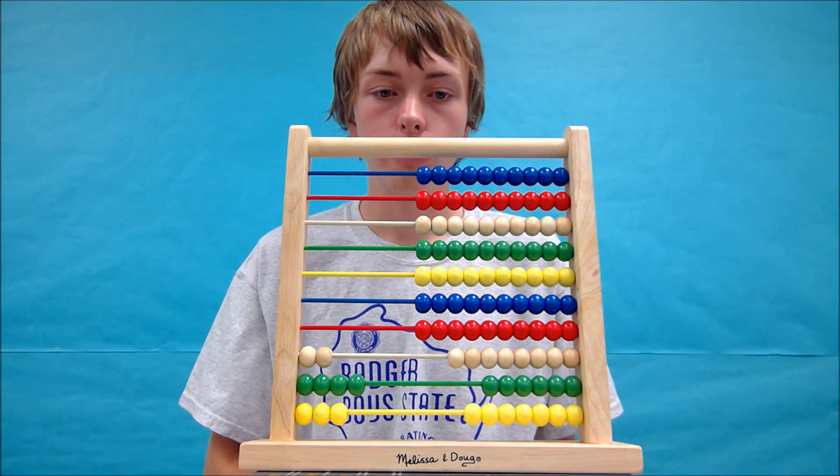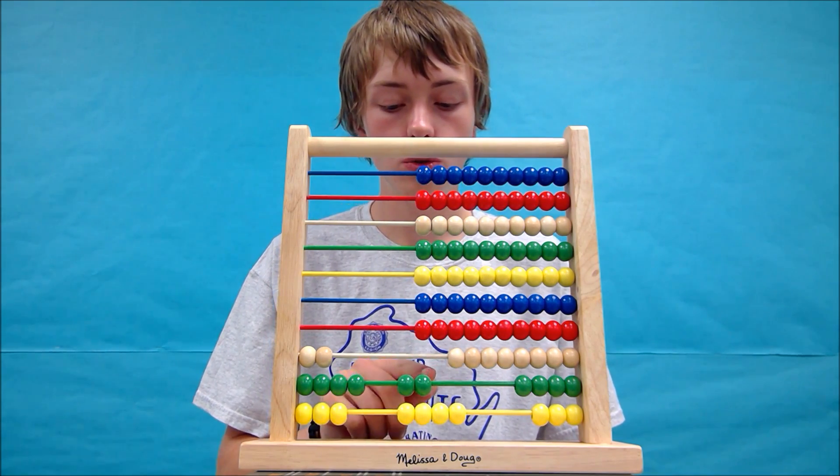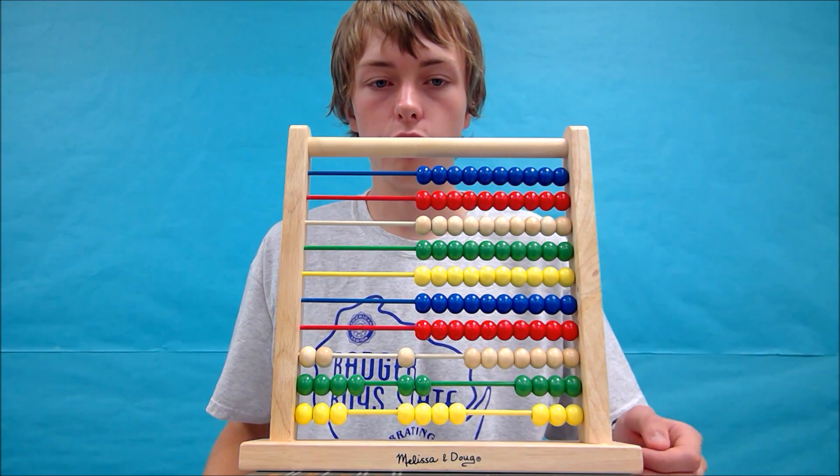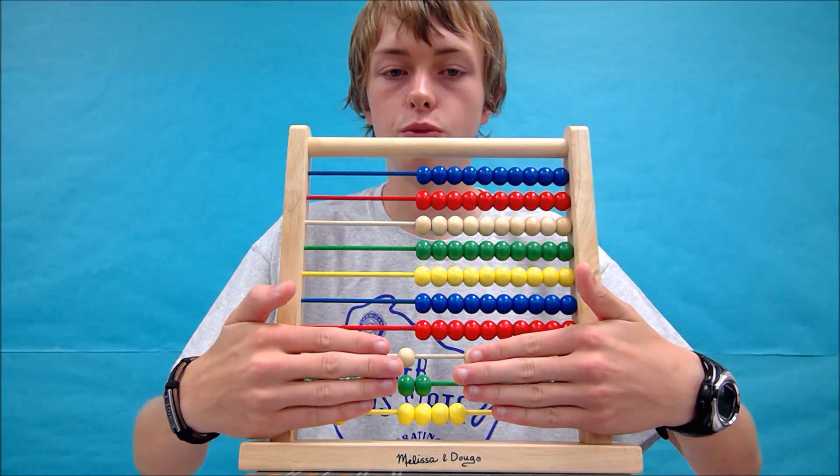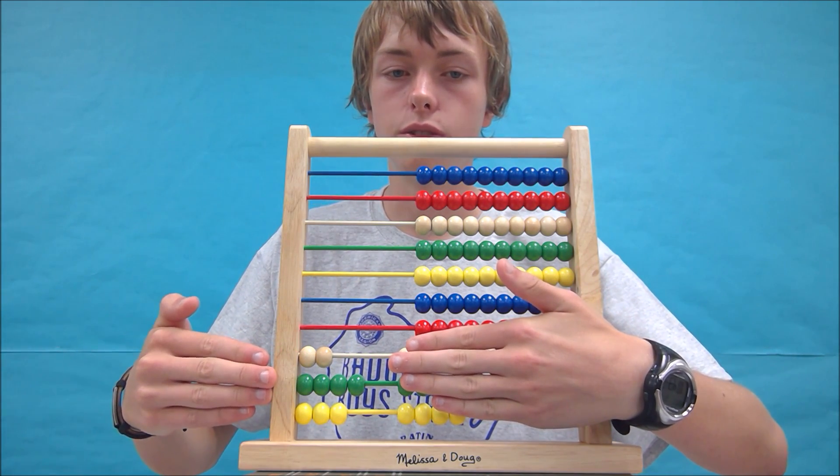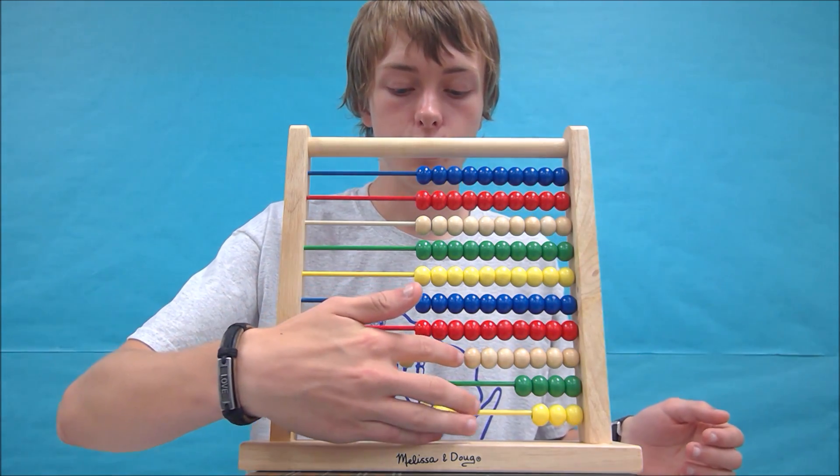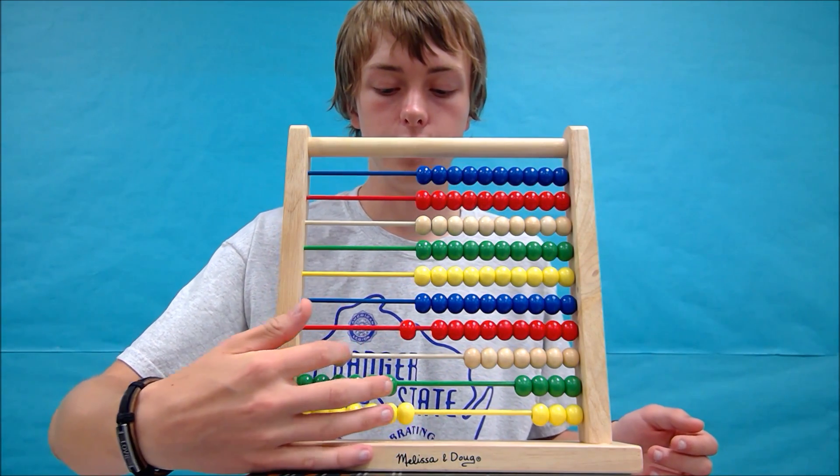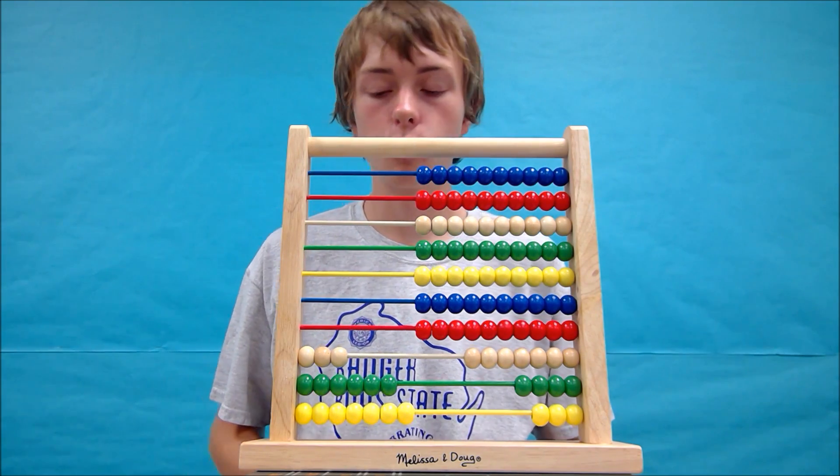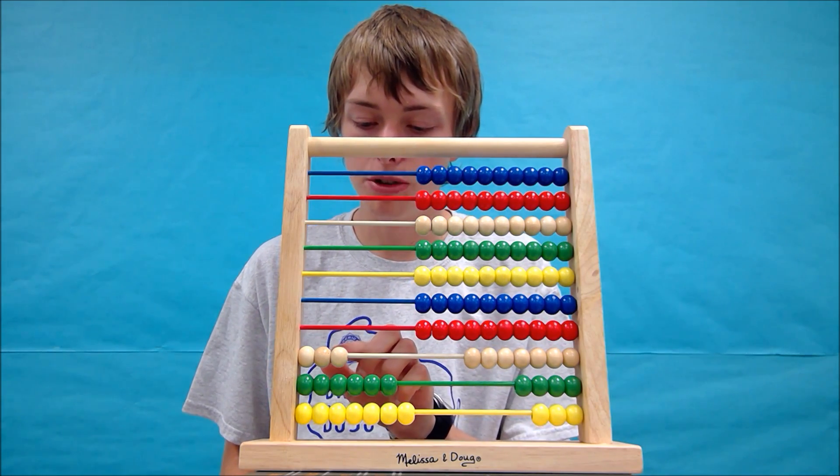And then we have to add 124 to that. So let's add 4 and then we need to do 2 and 1. I didn't move the beads all the way over this time, so you can see that there's 124 and there is 243. So 243 plus 124. And if we push the beads together, we can solve this equation.